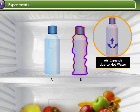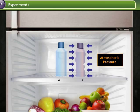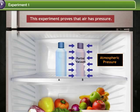The air inside bottle B expands due to the hot water. When the bottle is placed inside the refrigerator, the sudden cooling creates a partial vacuum. The extremely low pressure of the partial vacuum inside forces the higher pressure of the air outside the bottle to crush it. This experiment proves that air has pressure.